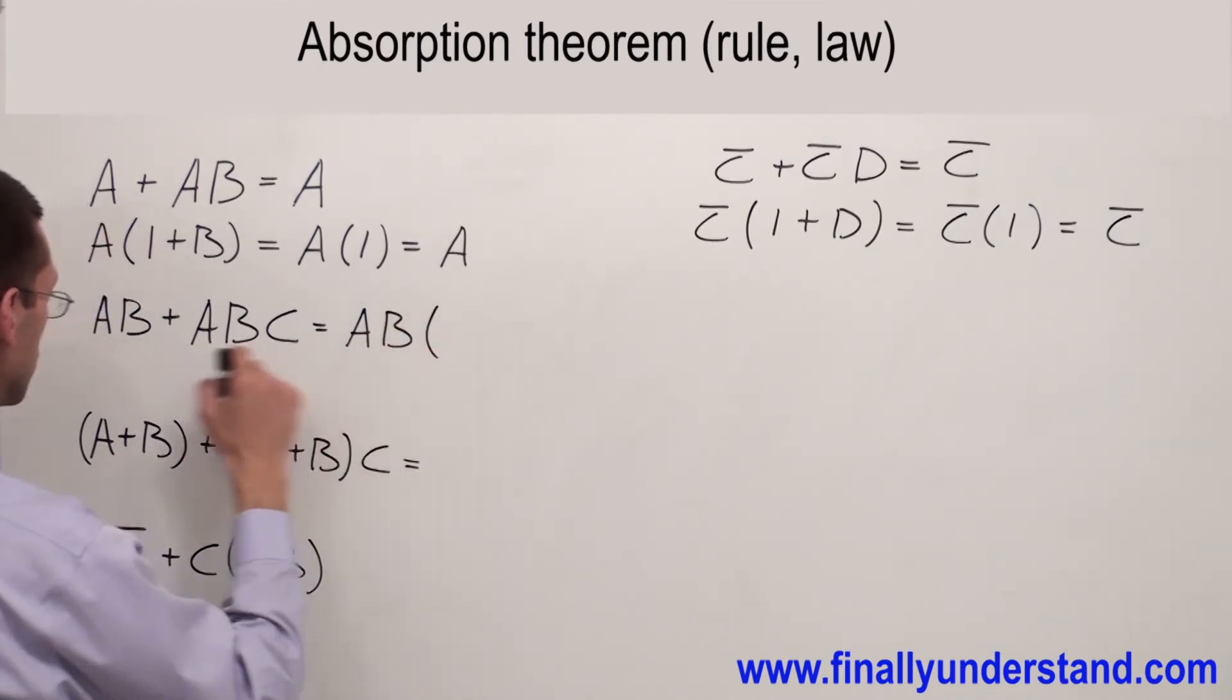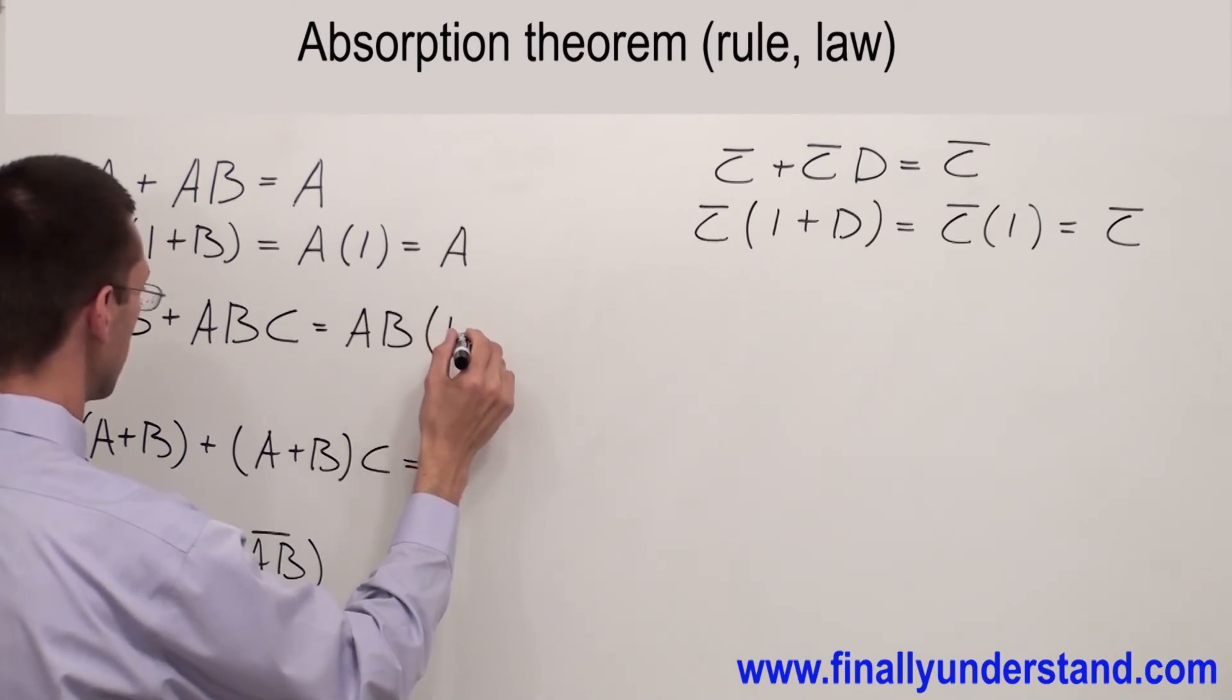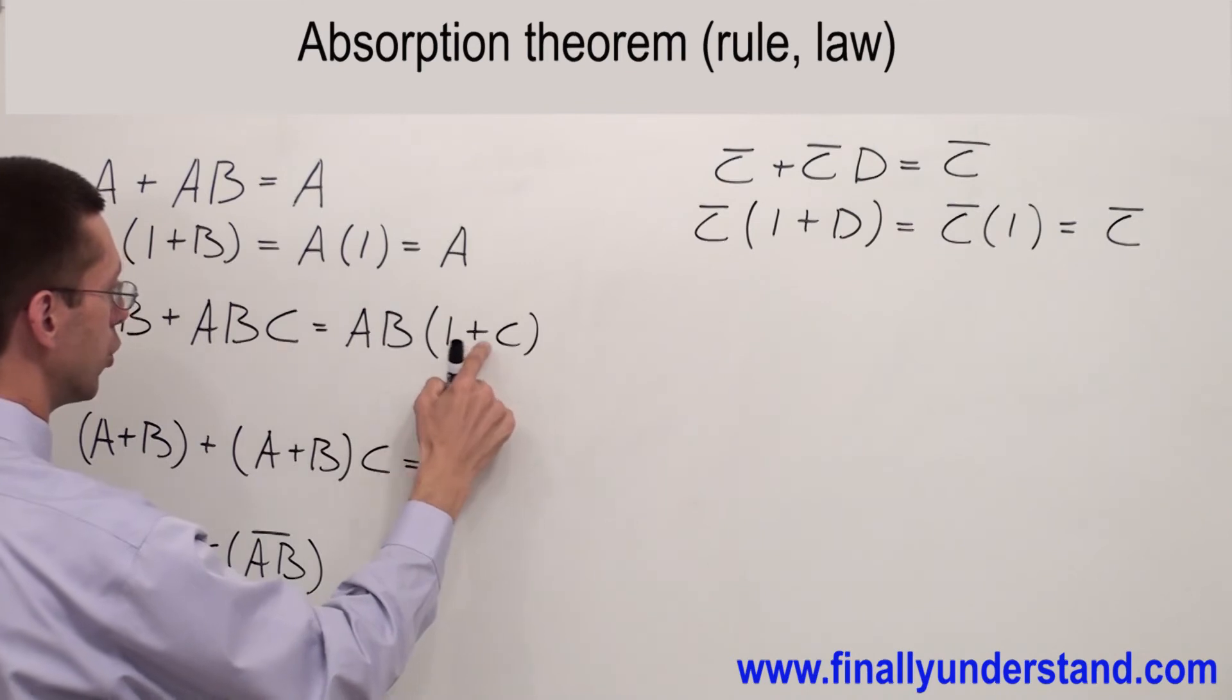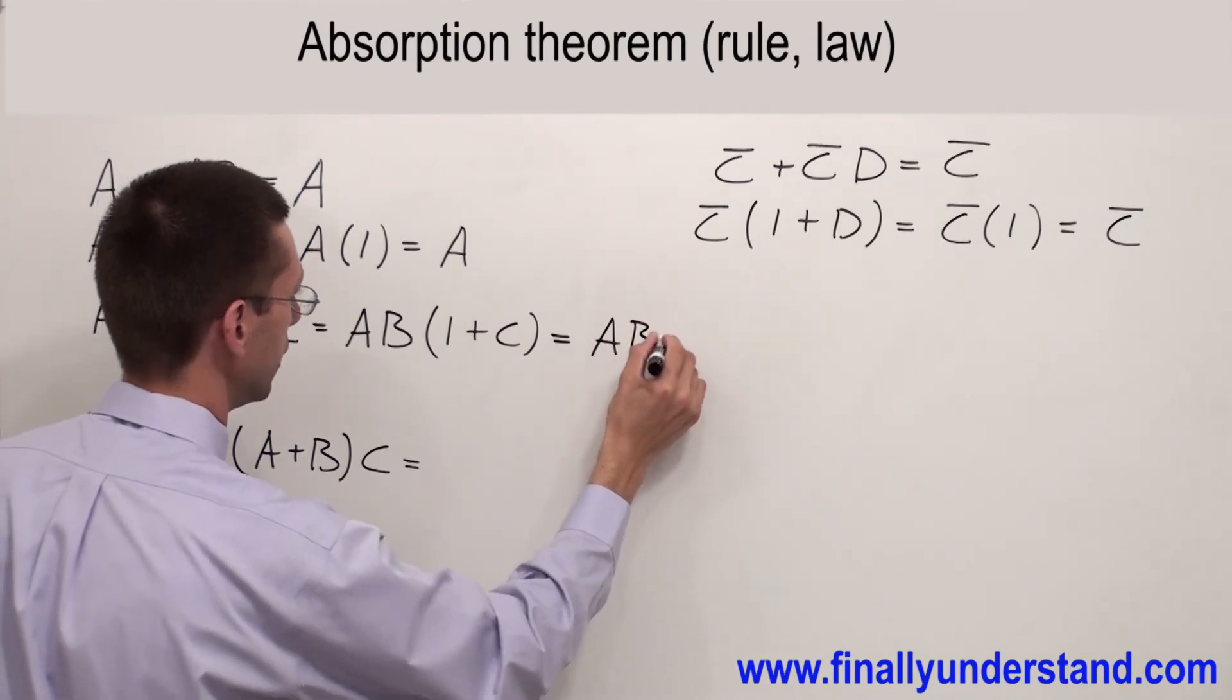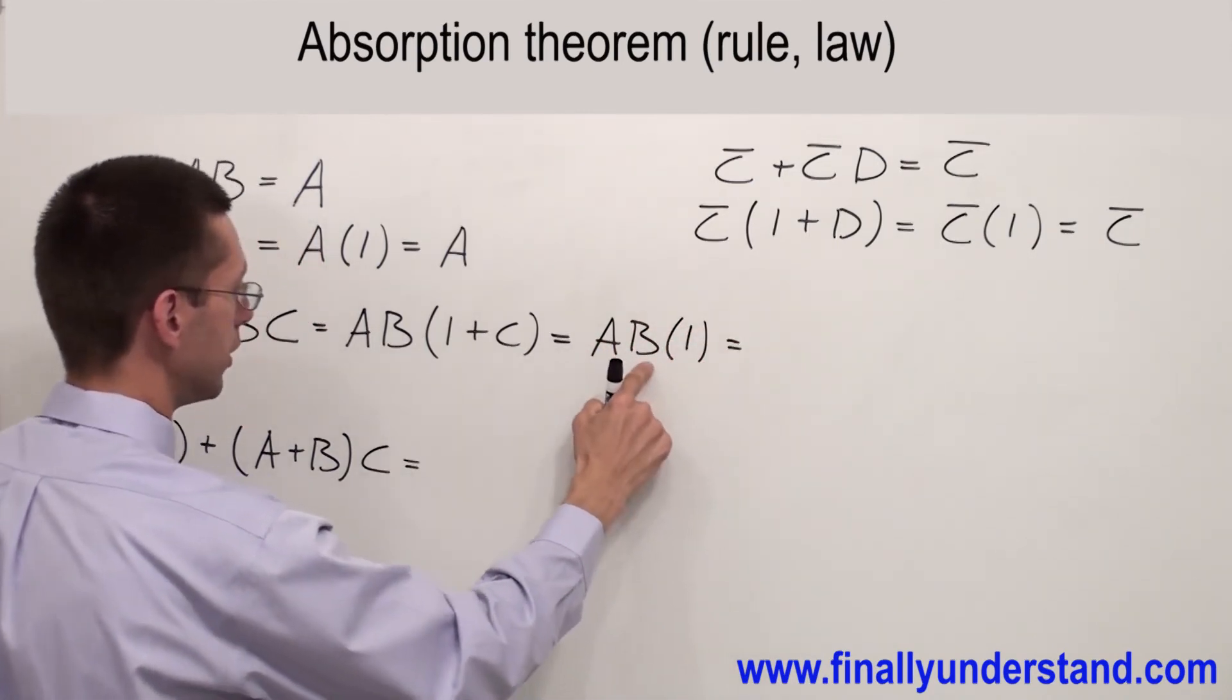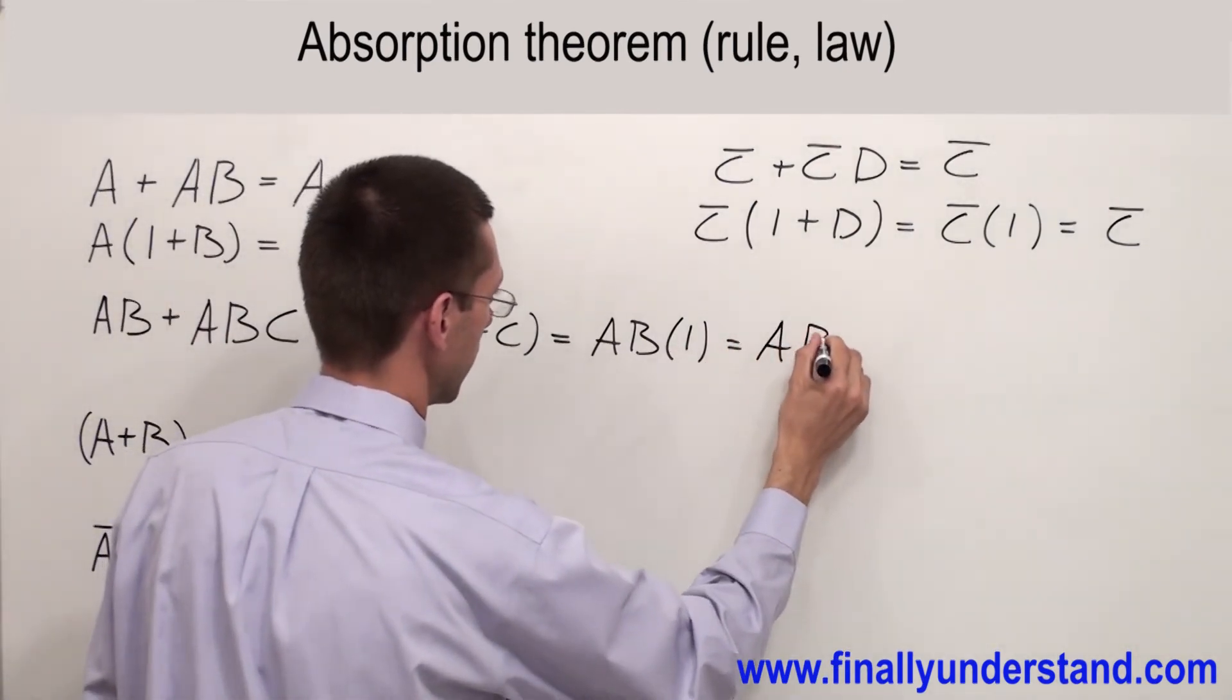So I'm going to factorize AB from these two terms. Because this is the common factor. And inside of the parenthesis I'm going to have 1 OR C. 1 OR C is always equal 1. That's why I'm going to write AB and 1. AB and 1 will give me AB.